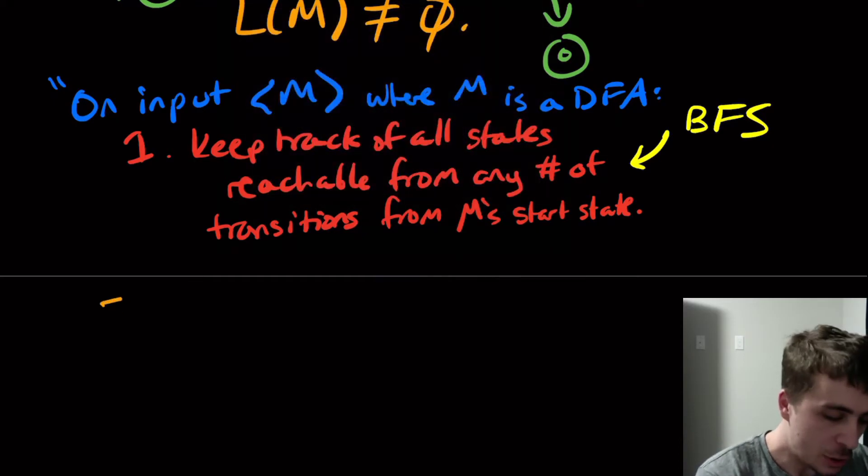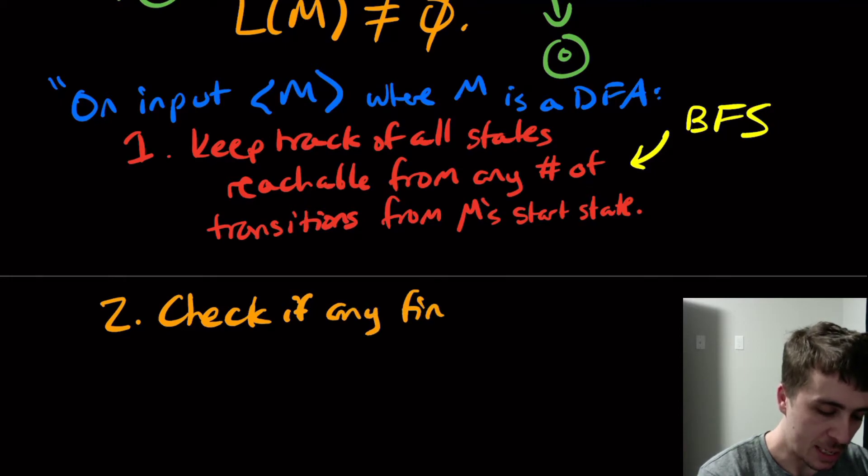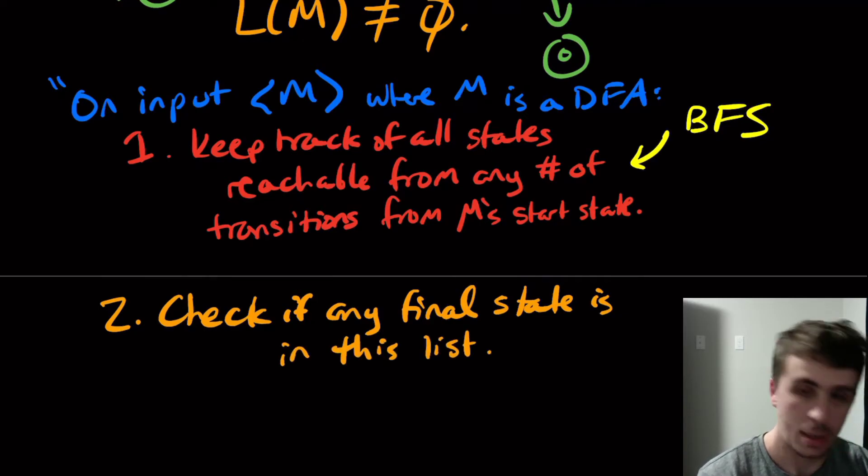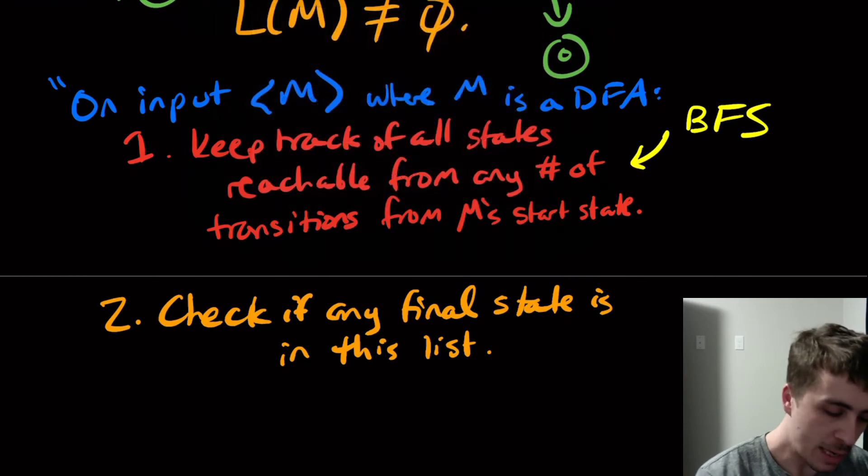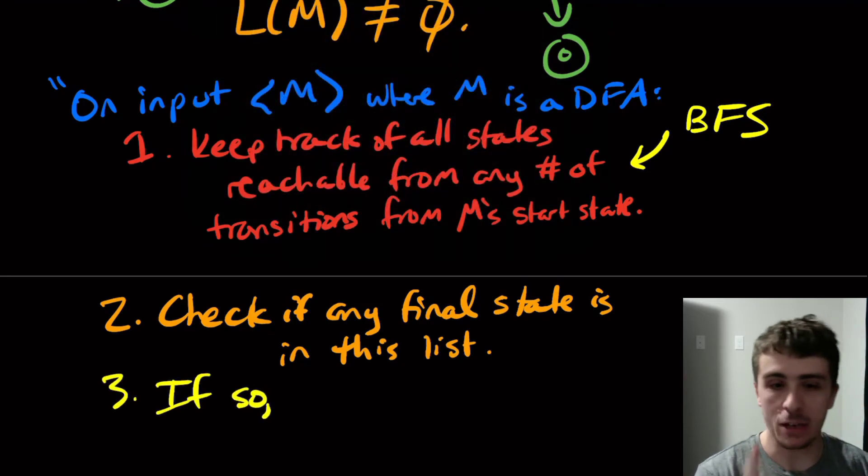And all that we need to do then is check if any final state is in this list. So if there are any final states in this list, then importantly, if there is a final state in that list, then the language is not empty. So we have to be really careful in this case. So if so, there is a final state in this list, then we need to say no, this language is not empty. We're trying to solve the emptiness problem here. And so we want to say the opposite answer, not the same answer. So here we need to reject.